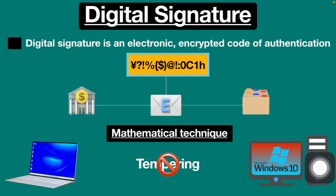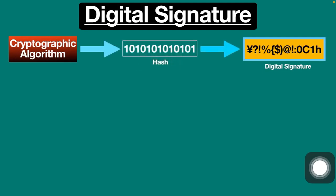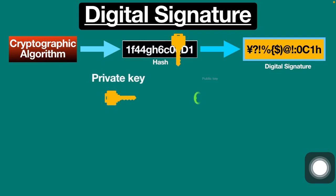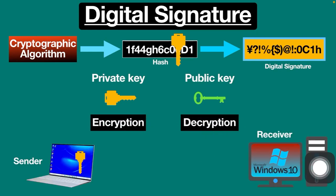Now let's see how a digital signature is created and how it works. A digital signature is created using a cryptographic algorithm to produce what's called a hash. The hash is then encrypted using a private key. Private and public keys are used for encryption and decryption — the sender encrypts the hash with their private key, while the receiver decrypts it with the sender's public key.